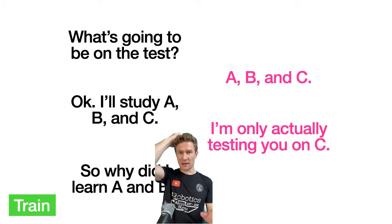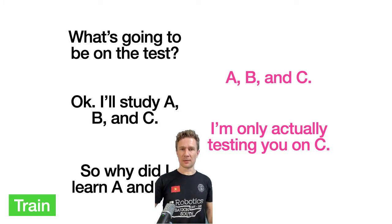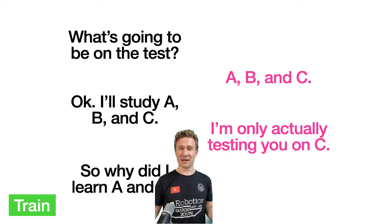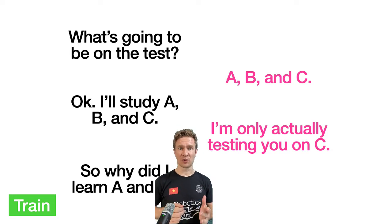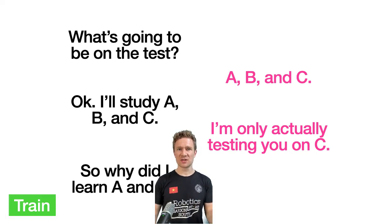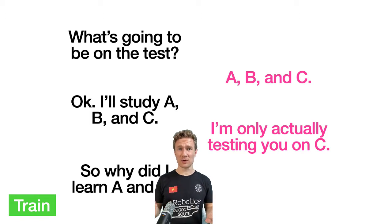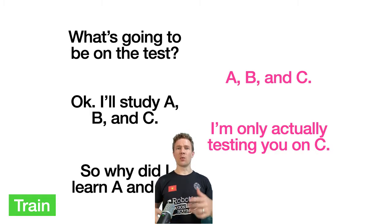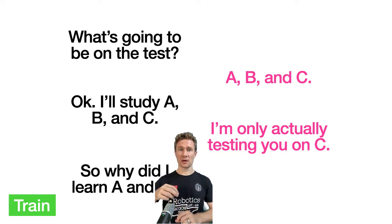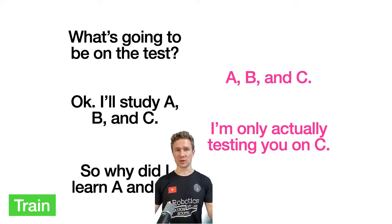One more situation: same scenario, but you study A, B, and C and the teacher decides to only test you on C. One reaction is, why did I waste time learning A and B? But another downside is that the teacher doesn't really know how well you understand A and B. If those were important things to learn, you'd want that information. When you give information about something someone is supposed to learn, you ultimately want to be able to evaluate all of the different things you were trying to teach.